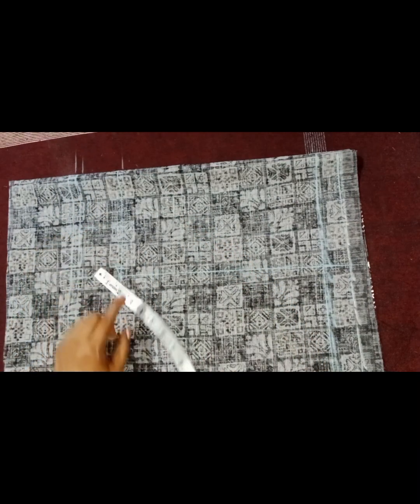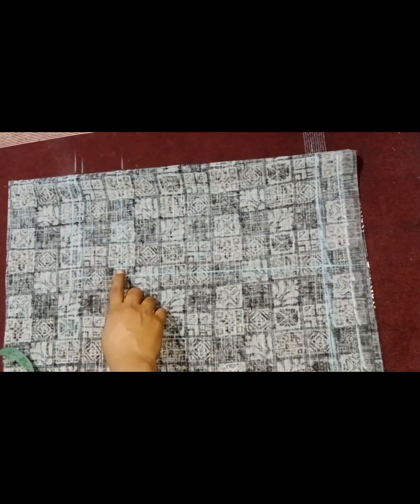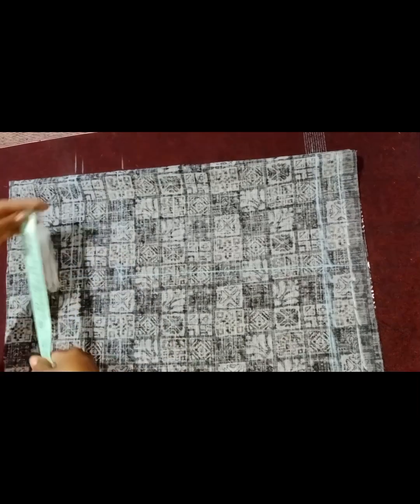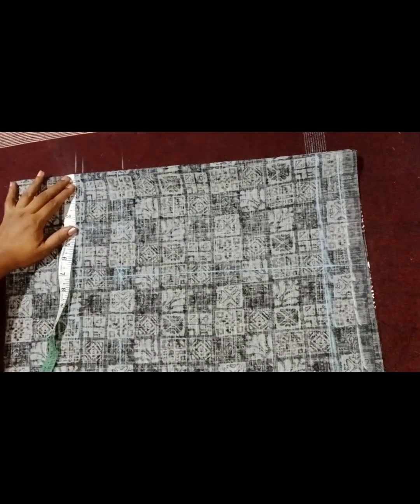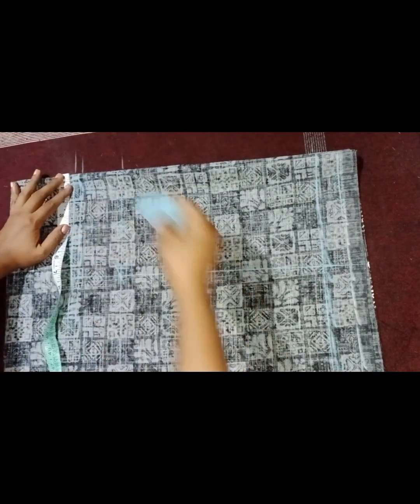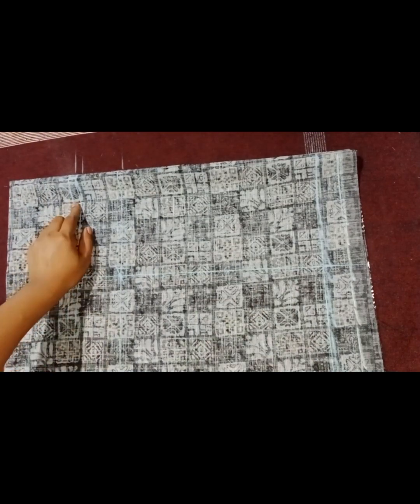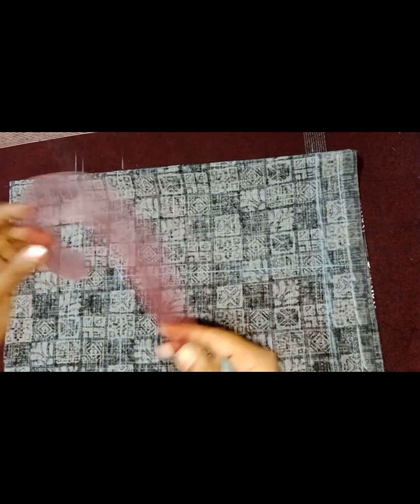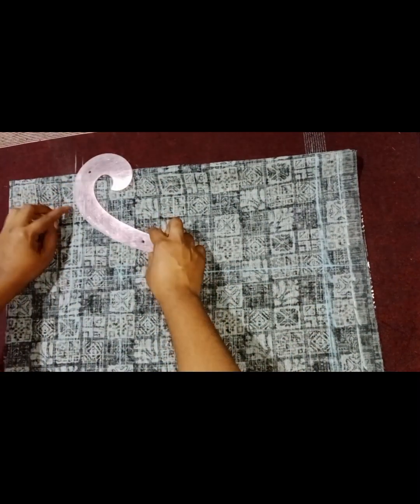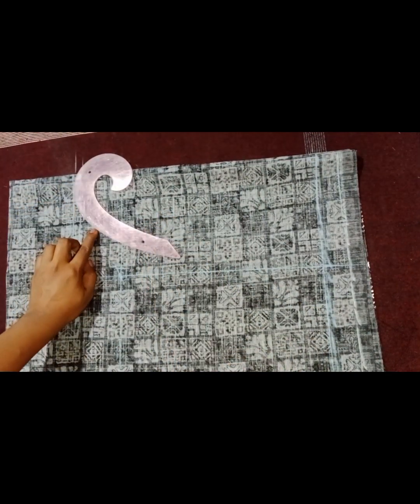Now we have two points. We will arrange this point. Then we will mark two points. We will make two points.